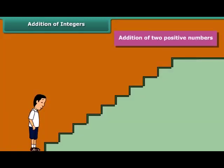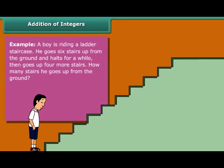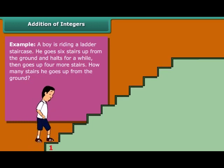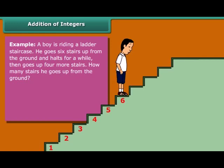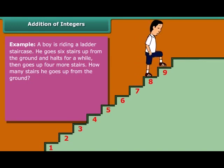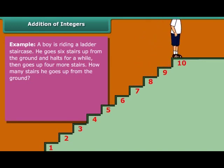Addition of two positive numbers. Example: A boy is riding a ladder staircase. He goes six stairs up from the ground and holds for a while, then goes up four more stairs. How many stairs does he go up from the ground? Plus 6 plus plus 4 is equal to plus 6 plus 4, which equals plus 10.